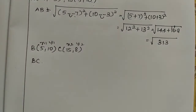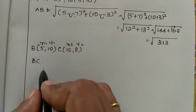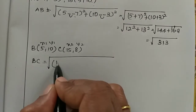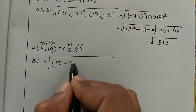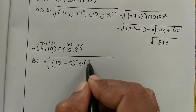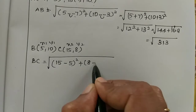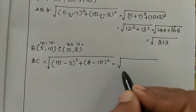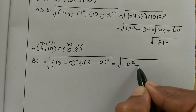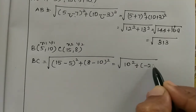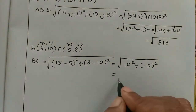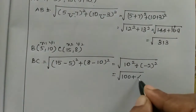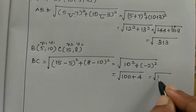Next BC length. Mark x1, y1, x2, y2. X2 is 15 minus x1 is 5, whole square, plus y2 is 8 minus y1 is 10, whole square. Which equals 10 squared plus minus 2 squared. So 100 plus 4, which equals root of 104.